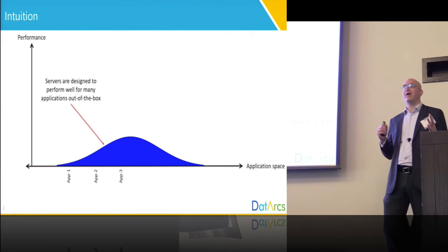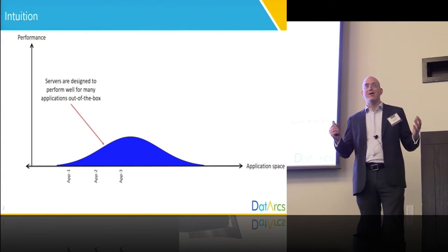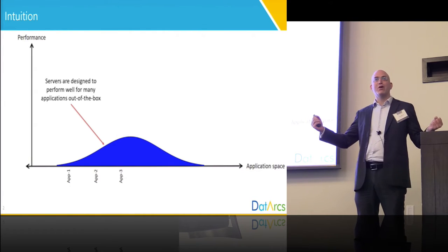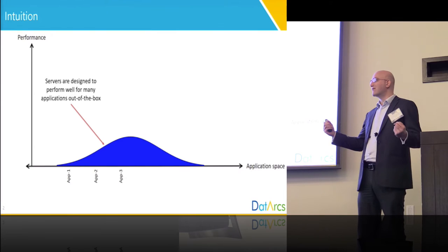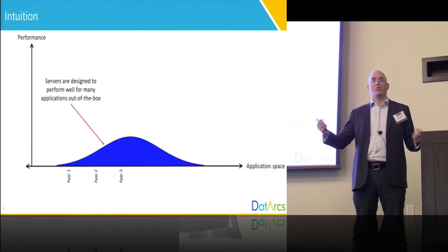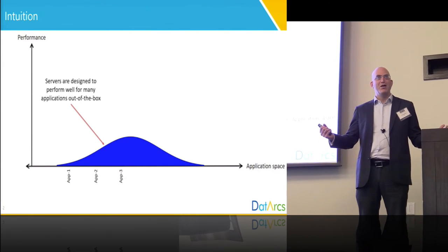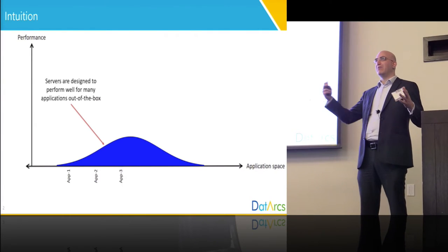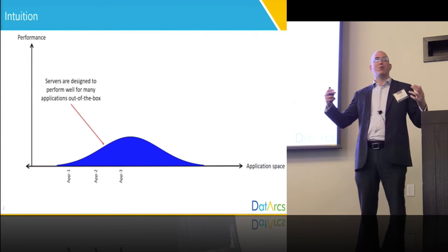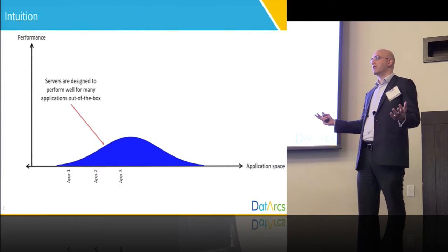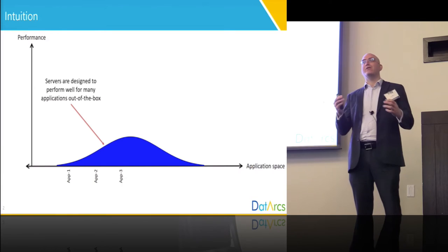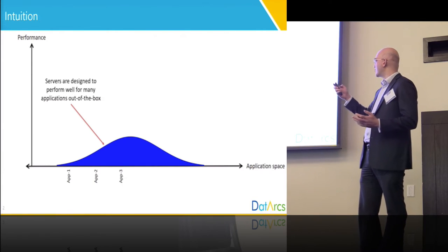I want to start with a bit of intuition. Server manufacturers today — servers are very complex — don't know exactly in advance what their servers will be used for, what sorts of applications. So what they do is they have a set of benchmarks that they run on their servers that they estimate are representative of what customers will do. And they make sure that these servers perform well under a wide variety of applications.